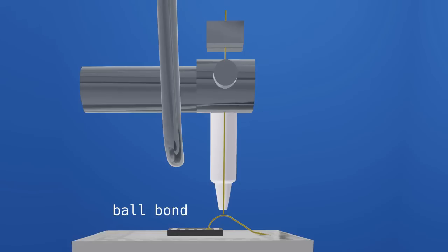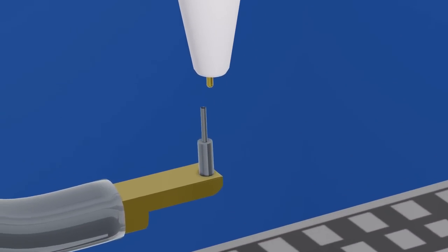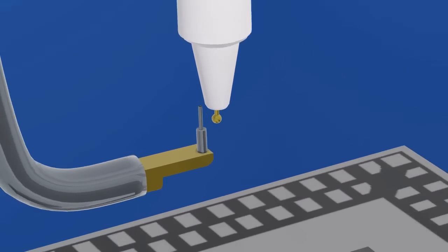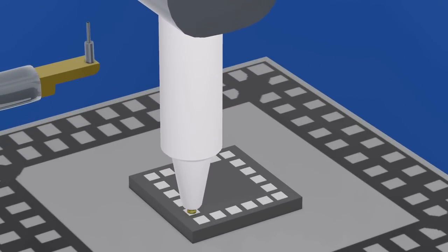This produces a ball bond on the bond pad and a stitch or crescent bond on the lead frame. A properly formed thermosonic bond should have a flattened ball-like appearance and be centered on the bond pad. The wire should not be pinched or necked down.